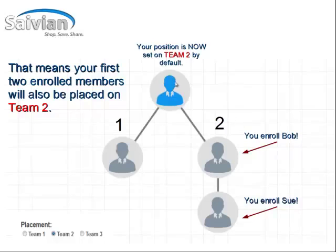So you're at the top, underneath your sponsor. The first person, Bob, you enroll goes down Team 2. The second person you enroll, Sue, is also going to go down Team 2, because you want to put your first two on one side.